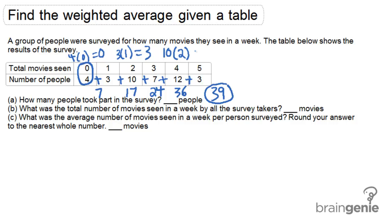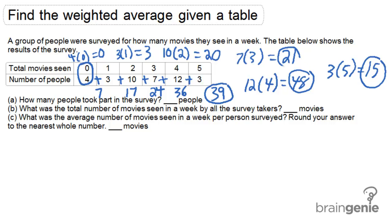Ten people have seen two movies each. That's 20. Seven people have seen three movies each for 21. Twelve people, four movies each, for 48. And three people have seen five movies each for a total of 15 movies. But since we want the total number of movies for all the survey takers, we have to add up all of these individual totals.